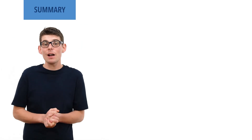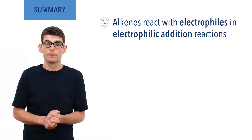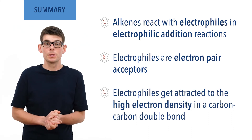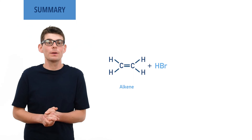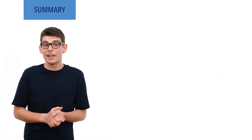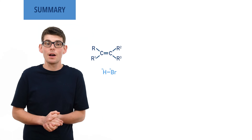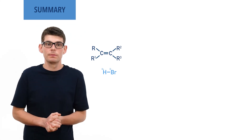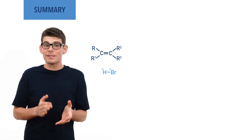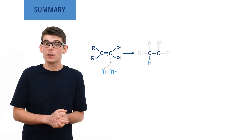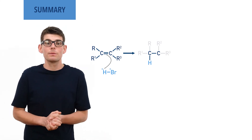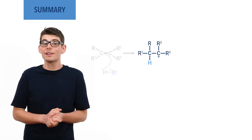To summarise: alkenes react with electrophiles in electrophilic addition reactions. Electrophiles, electron pair acceptors, are attracted to the high electron density in a carbon-carbon double bond. When an alkene reacts with a hydrogen halide, a halogeno alkane is formed. With hydrogen bromide, a bromo alkane is formed. Hydrogen bromide, HBr, is a polar molecule due to bromine's high electronegativity and hydrogen's low electronegativity. The hydrogen with a partial positive charge is electron deficient and able to act as an electrophile. It accepts a pair of pi bonding electrons from the carbon-carbon double bond in the alkene and this forms a new bond between the hydrogen and a carbon atom, leaving the other carbon atom from the double bond with a positive charge, forming a carbocation intermediate.